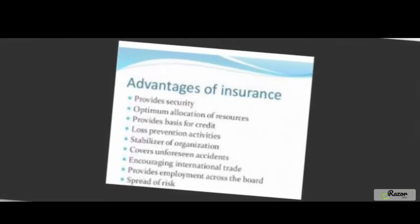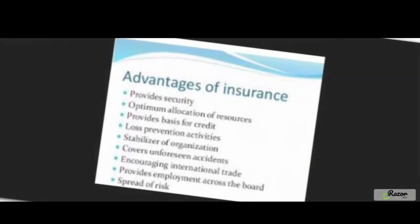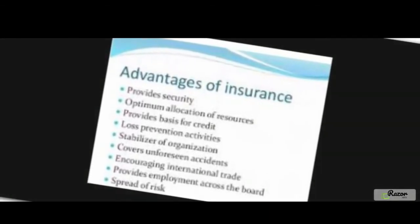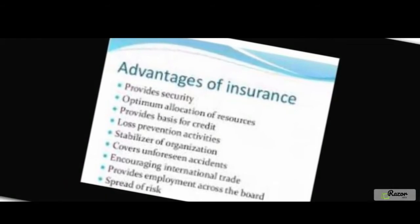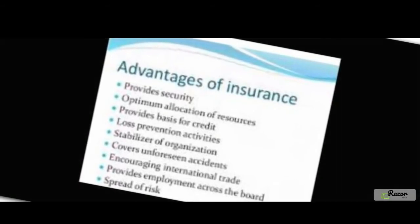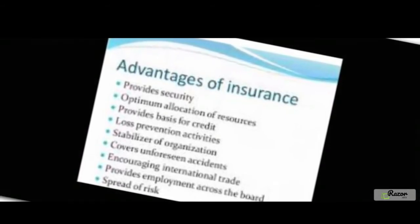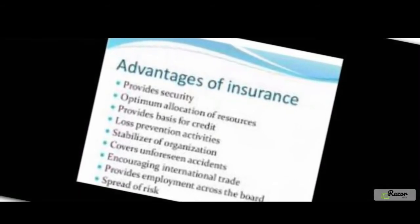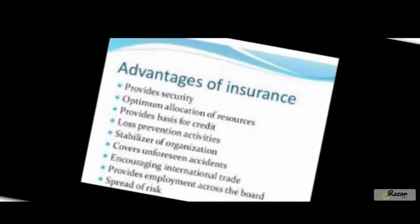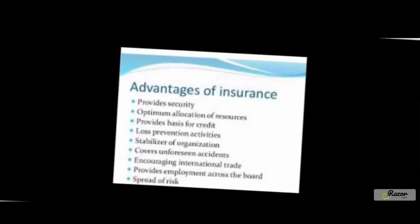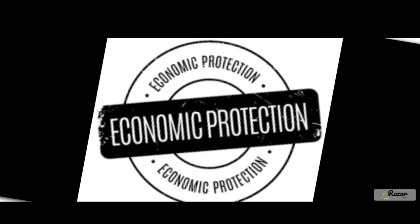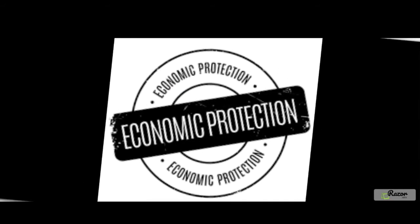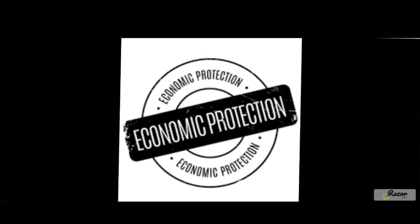Insurance contracts that do not come under the ambit of life insurance are called general insurance. The different forms of general insurance are fire, marine, motor, accident, and other miscellaneous non-life insurance. Like life insurance, general insurance products come at a price in the form of a premium, along with financial security.